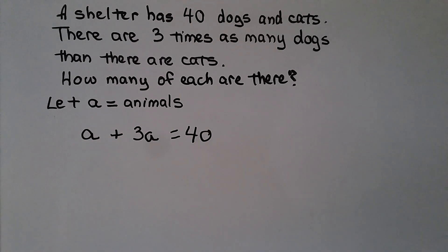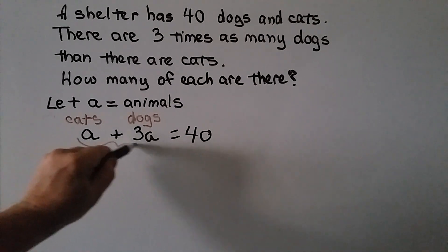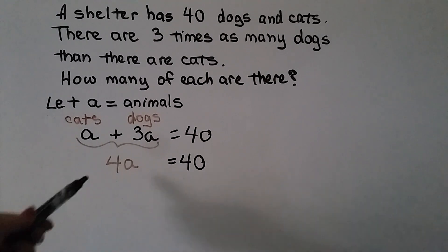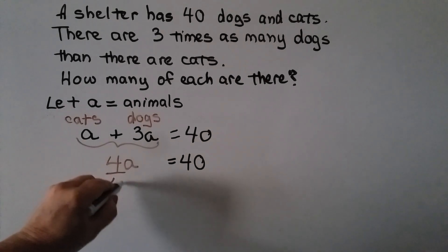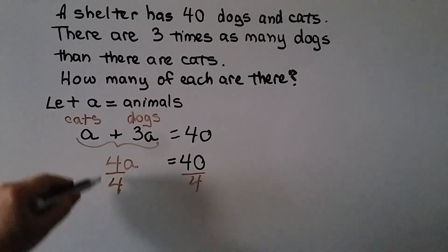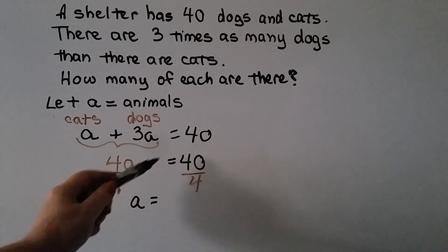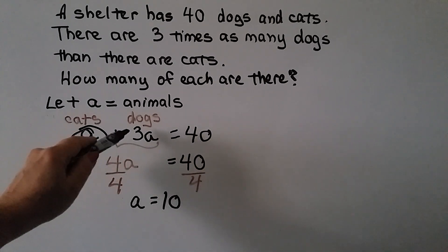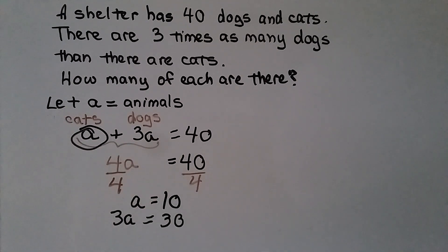Because we have an a plus three a's, that means we have four a's in all, and it's equal to 40 animals. Because four a means four times some number a, we can divide both sides of the equal sign by the coefficient four to isolate a. Four fourths is a one, so we have one a and 40 divided by four is 10. We know a is equal to 10. If a is equal to 10, then three times a must be three times 10, which is 30. And if we add these together, we get 40 animals, so we know we did it correctly.